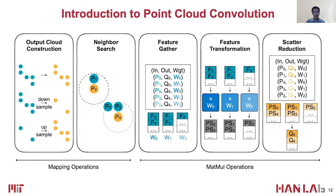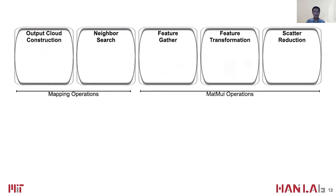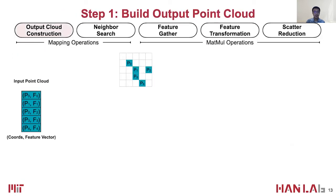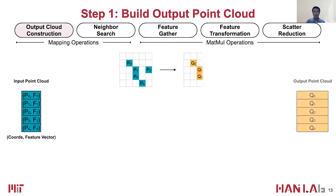Specifically, point cloud convolution contains five steps. We will go through them one by one. First, given the input point cloud, we need to calculate the output coordinates. As mentioned above, normally the output point cloud is exactly the same as the input point cloud.